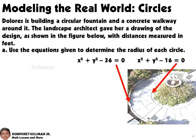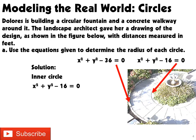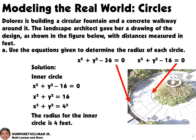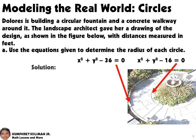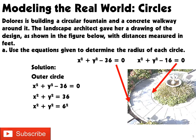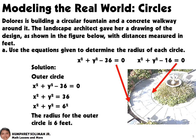In solving letter A, we will use the equation for the inner circle. This will give us a radius of the inner circle equal to 4 feet. And if we will use the equation for the outer circle, this will give us a radius of the outer circle equal to 6 feet.